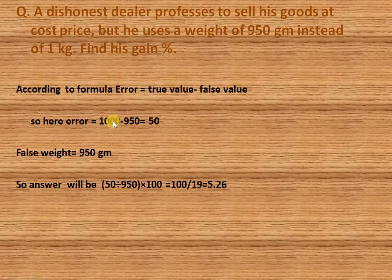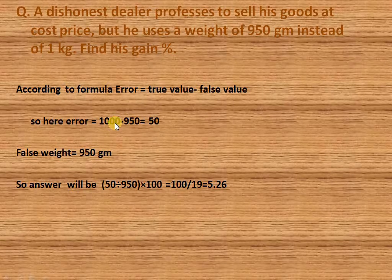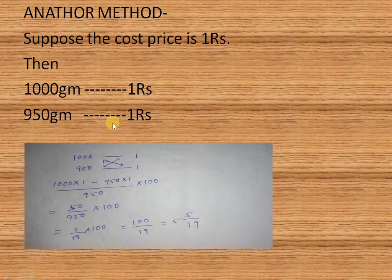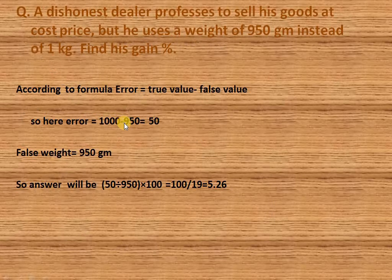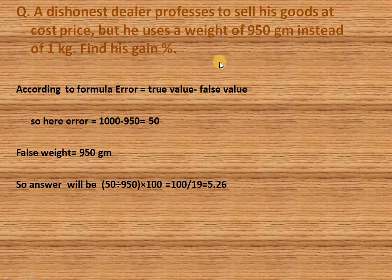So the error will be 1 kg minus 950 grams. Since 1 kg equals 1000 grams, the error is 1000 grams minus 950 grams, which equals 50 grams. So the false weight is 950 grams and the error is 50 grams.